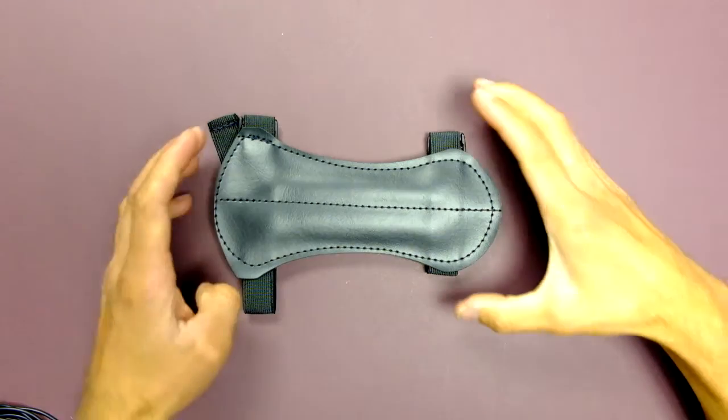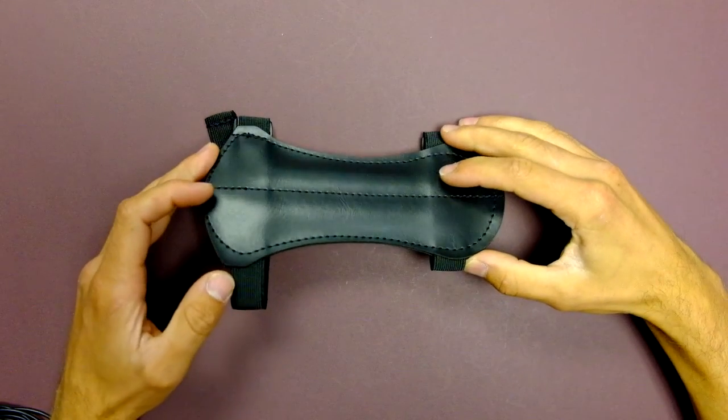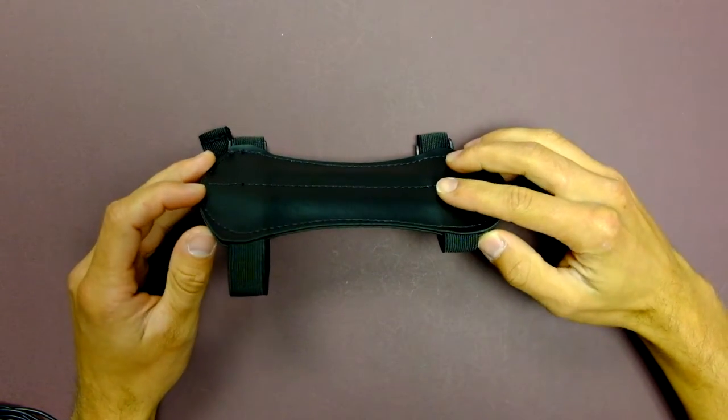This is a relatively simple arm bracer made of two layers of Pauvet material.